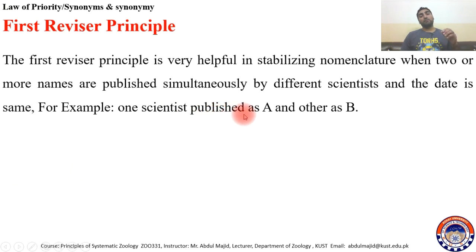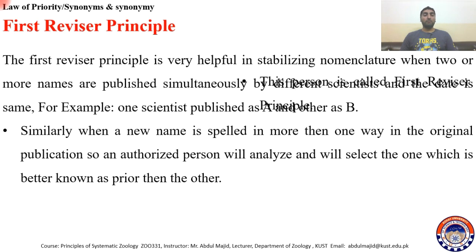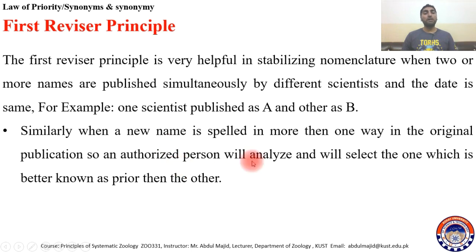For example, one scientist published name A for a certain species and another scientist published name B. Similarly, when a new name is spelled in more than one way in the original publication, an authorized person will analyze and select the one that is better known or prior to the other. The First Reviser, who is a person, has full power to decide what name will be valid — either A or B.